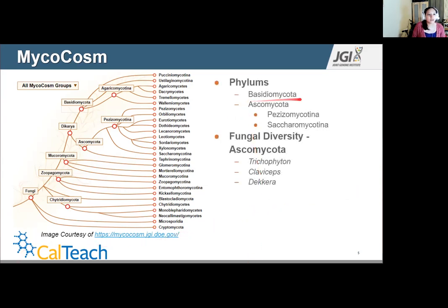First off, Basidiomycota. This phyla includes mushrooms and rust, which you typically think of when you think of fungi. But then there's also Ascomycota, and it has main two subphyla, Pezizomycotina, as well as Saccharomycotina. And fungi in these subphyla include anything from truffles to yeast.